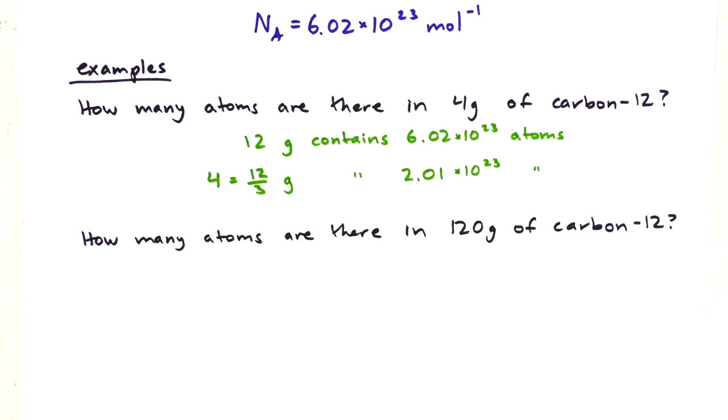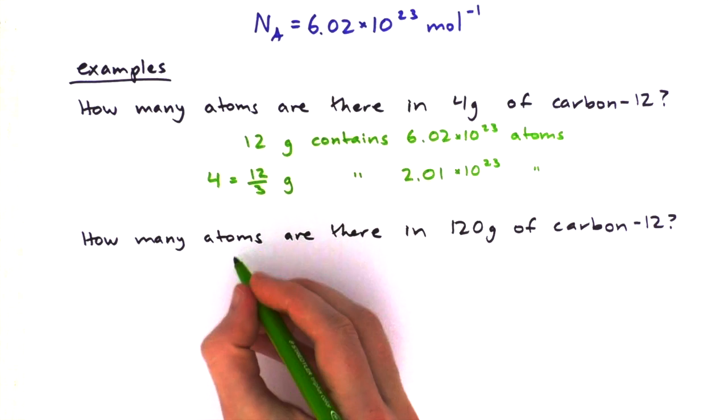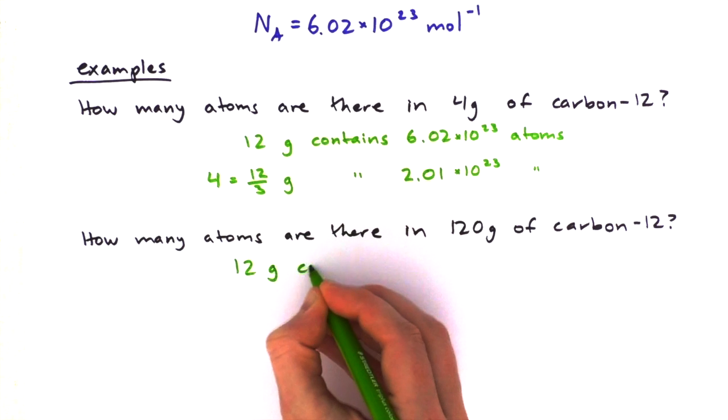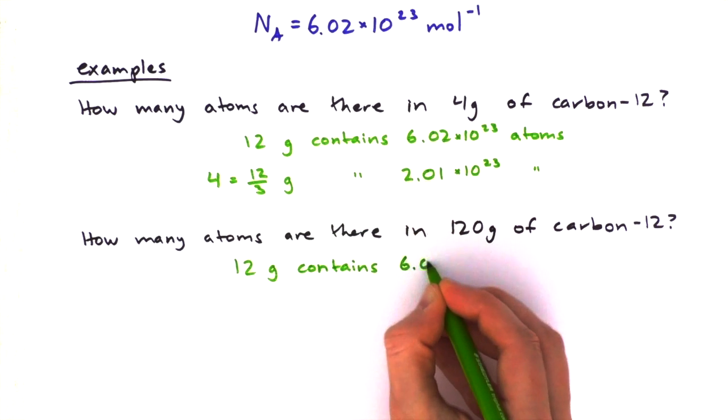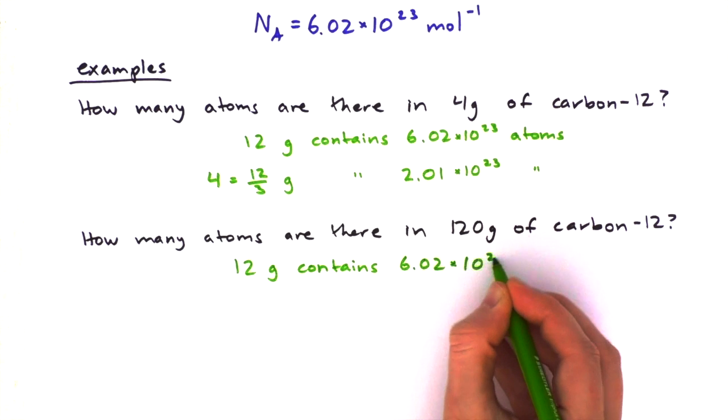Next one: How many atoms are there in 120 grams of carbon-12? Again, we know that 12 grams contains 6.02 times 10 to the power of 23 atoms.